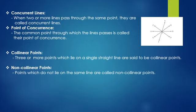Now, what this point is called? This point is called point of concurrence. The common point through which the lines passes is called their point of concurrence. So, in this figure, point P is the point of concurrence.